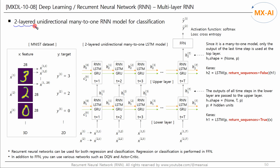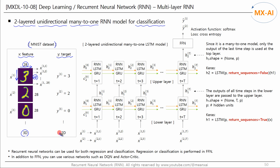In the first type, we will create a two-layered unidirectional many-to-one model and use this model to perform classification. Let's use this model to classify MNIST images. The MNIST dataset consists of grayscale images X and targets Y. One image is a 28 by 28 matrix. If the rows of this image are dependent on each other, it makes sense to learn them using recurrent neural networks. The 28 columns can be viewed as features, and the 28 rows can be viewed as time steps. Therefore, we can feed this data into the RNN model without any modification.